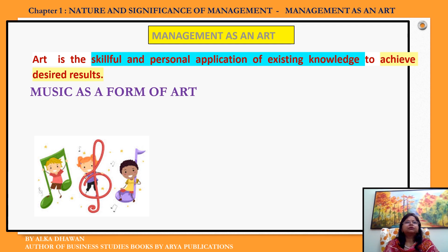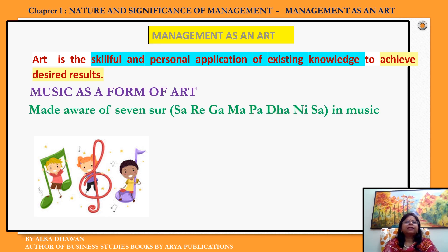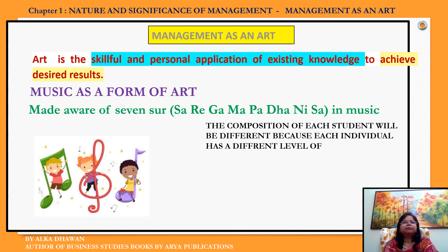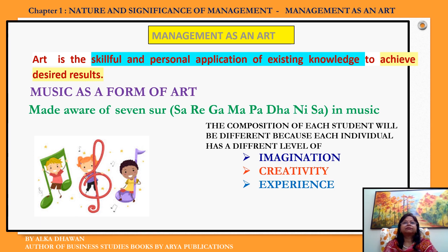What we see here is music, which is a form of Art. You can see these little children enjoying music. Anybody who has to learn music has to be made aware of the seven notes in music. Even if we assume that these three students have undergone training for music and have become well versed in these seven notes, when they are asked to make a composition, the composition of each one of them is going to be different. Because each individual has a different level of imagination, creativity, experience, innovation, and initiative.